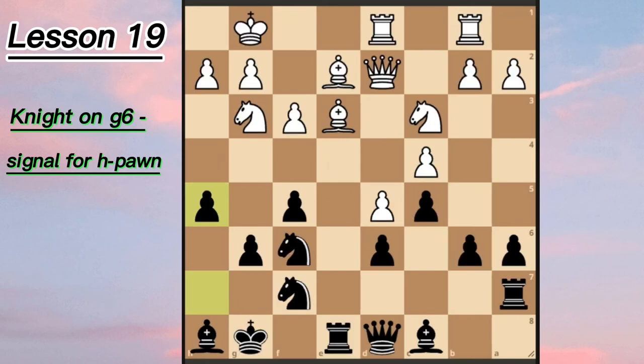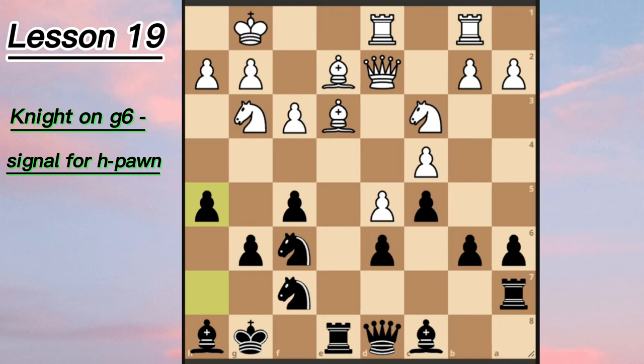The same story can happen not only with White pieces but with Black. This is another game played by Botvinnik — this time he was playing Black. Here White has a knight on g3 — it's like a mirror attack. It took Black only six moves to outplay White. He played h5, the same idea.